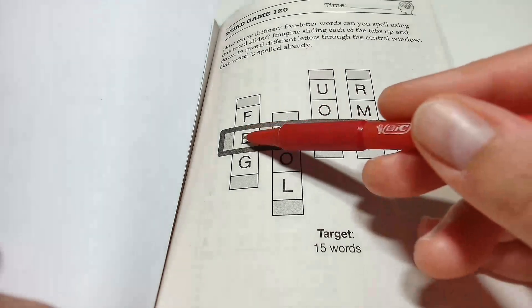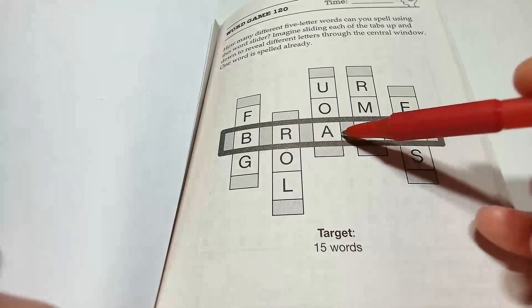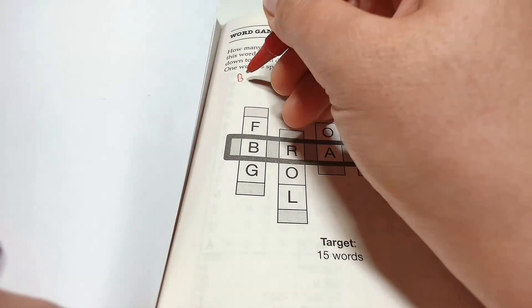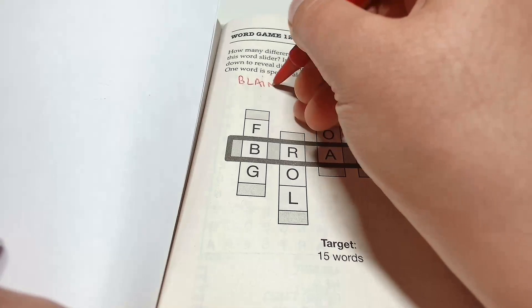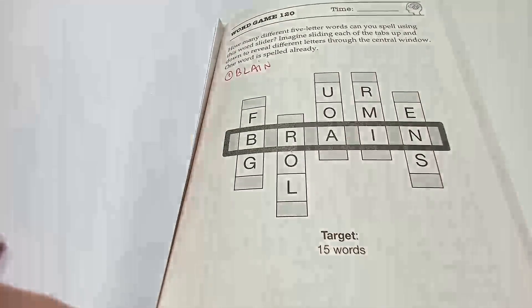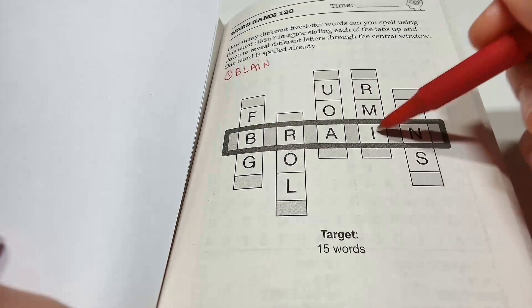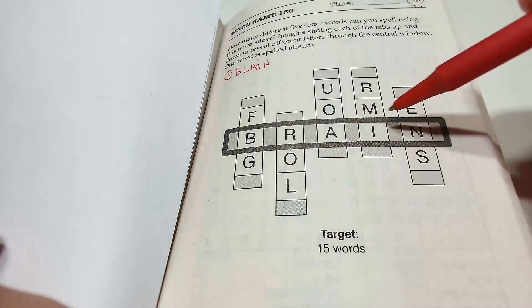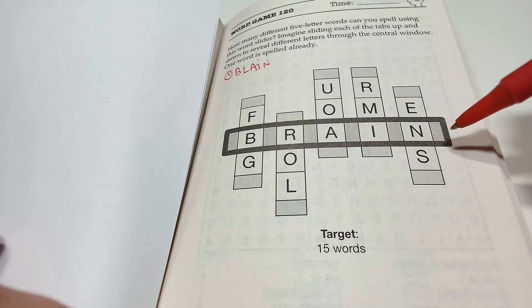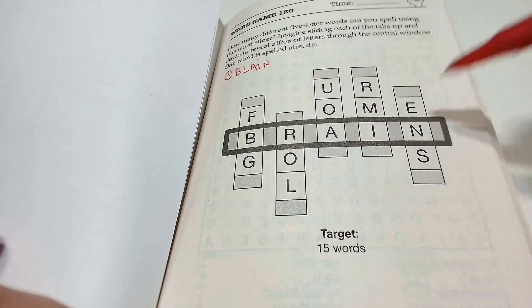I found the word blain, B-L-A-I-N. This would be word number one. The second one, blame, B-L-A-M-E.